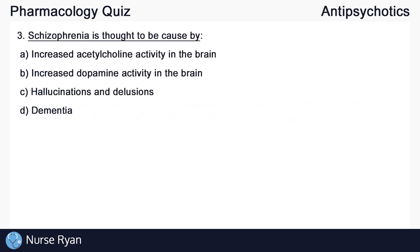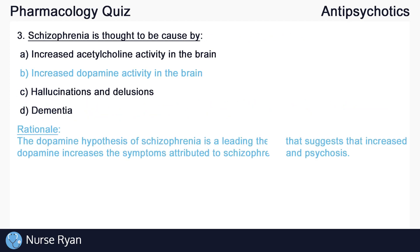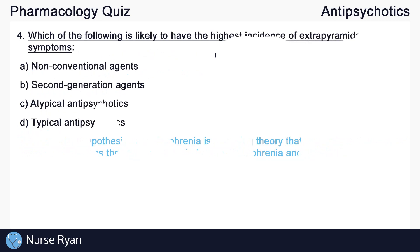Moving on to question number three: schizophrenia is thought to be caused by... The answer here is B, increased dopamine activity in the brain. The dopamine hypothesis of schizophrenia is a leading theory that suggests that increased dopamine increases the symptoms attributed to schizophrenia and psychosis.